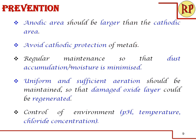Regular maintenance of components, machines, or vehicles should be carried out so that dust accumulation and moisture are minimized. Uniform and sufficient aeration should be maintained so that if there is any damage in the oxide layer, there is a possibility for the oxide layer to be regenerated. We should also control the environment — ensure that the temperature and pH are normal, not acidic or alkaline, and that there is no chloride concentration or corrosive medium in the environment.